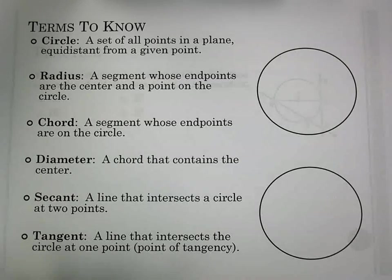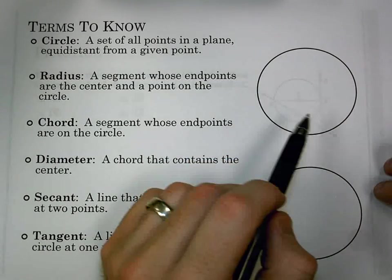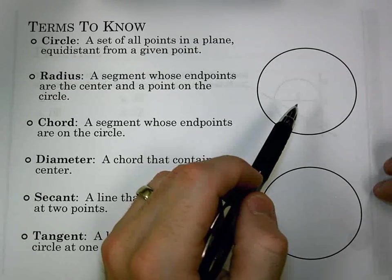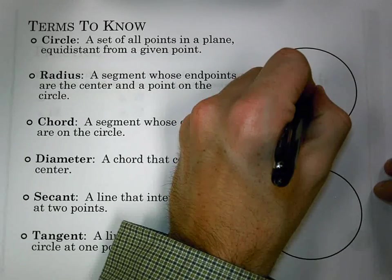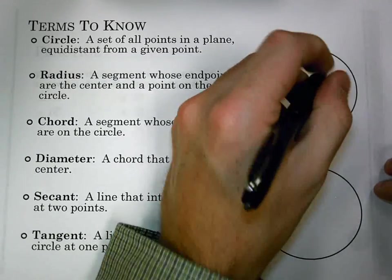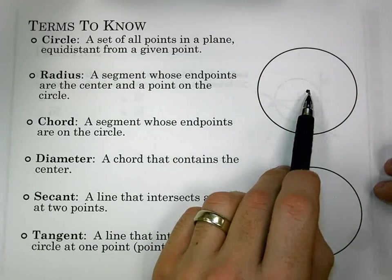First off, a circle is a set of all points in a plane equidistant from a given point. So we should be familiar with what a circle is, but it's not a polygon, something we talked about last chapter.